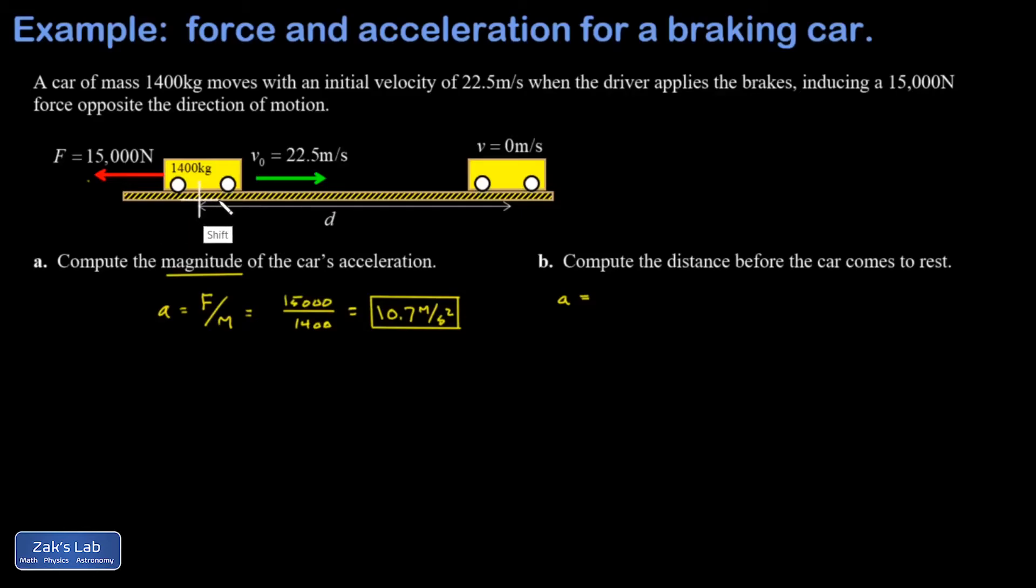origin right at the starting position and I'm calling rightward positive. And that means my acceleration is negative 10.7 meters per second squared. My initial position is zero, my final position is what I'm looking for and I'll call that d.